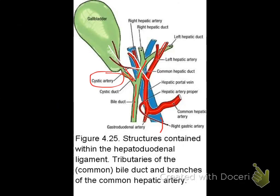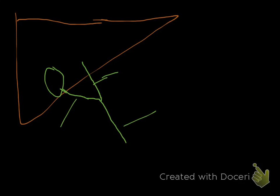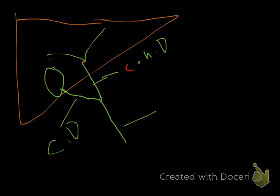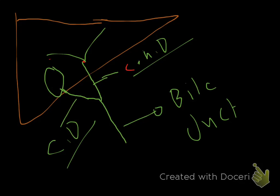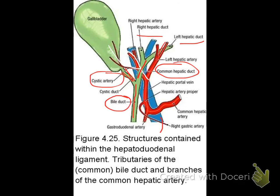Clarification on terminology: the common hepatic duct is the result of joining the right hepatic duct with the left hepatic duct. The bile duct is the result of joining the common hepatic duct with the cystic duct. So: left hepatic duct plus right hepatic duct equals common hepatic duct; common hepatic duct plus cystic duct equals the bile duct.